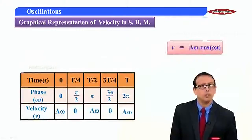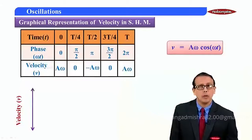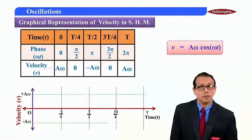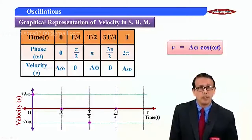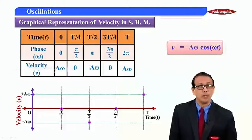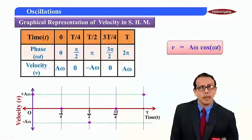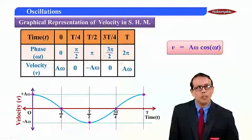Now let's plot v versus t. We will not show the calculation in the exam — we directly fill the table. The peak values are +Aω and -Aω. Plotting the points: first value is Aω, next 0, then -Aω, then 0, then +Aω again. Joining the curve, since the formula contains cosine and Aω is the peak value, this is a cosine curve. So velocity versus time is a cosine curve. That's all in this module — see you in the next module.